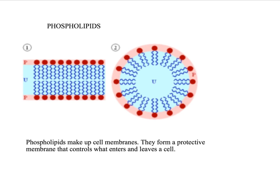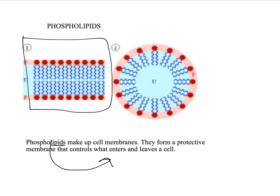This is new information, so I would recommend that you write this down. Phospholipids are the type of lipid that makes up cell membranes. They form a protective coating around the cell and control what goes in and out of the cell. The function of the phospholipid is to control what enters and leaves the cell. Looking at diagram 1, it shows what's called a bilayer — bi meaning 2 — so we have 2 layers of phospholipids.